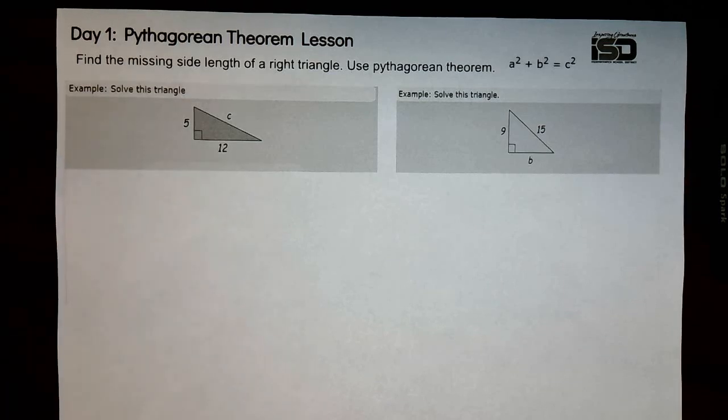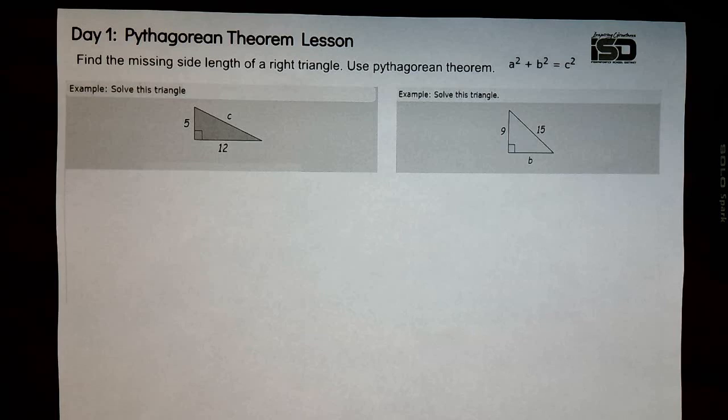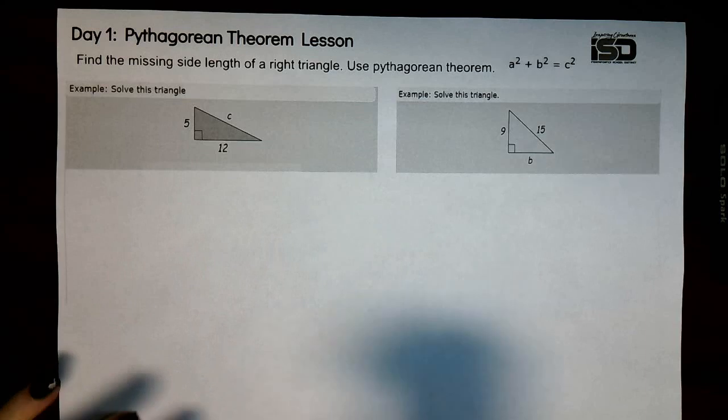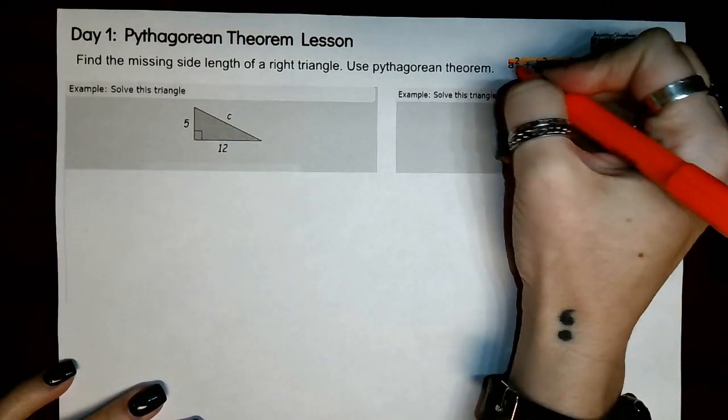Some of these lessons are going to deal with skills that you have already learned in class. Some of them are going to be newer skills. Starting with this first one, it is dealing with Pythagorean theorem. The formula that we will use is a squared plus b squared equals c squared.